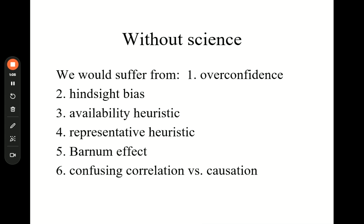Without science, we'd suffer from overconfidence — we think we know more than we do. Hindsight bias is when we say 'I just knew that was true' — no, you didn't, you have to do the experiment. Availability heuristic is what comes to mind easily; our mind automatically jumps to some thought. Representativeness heuristic is stereotyping. And we would confuse correlation with causation — just because two things go together doesn't mean one causes the other.